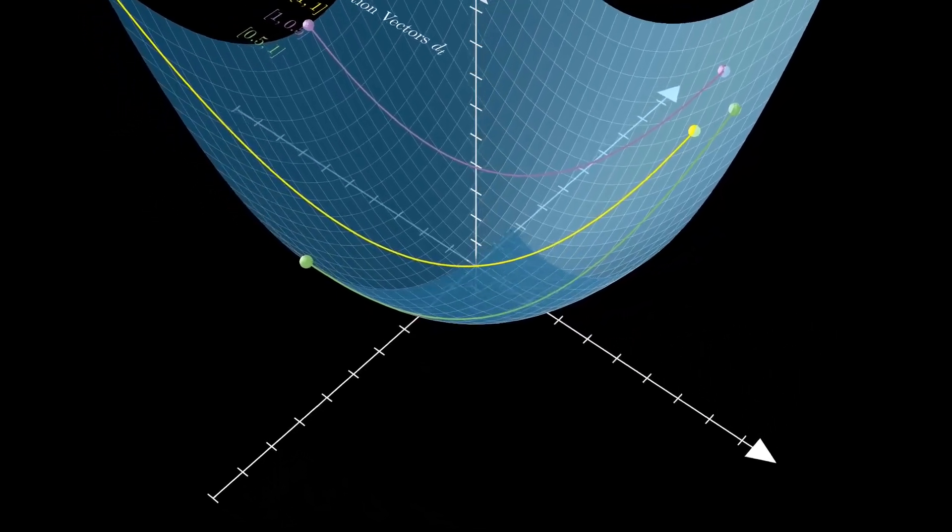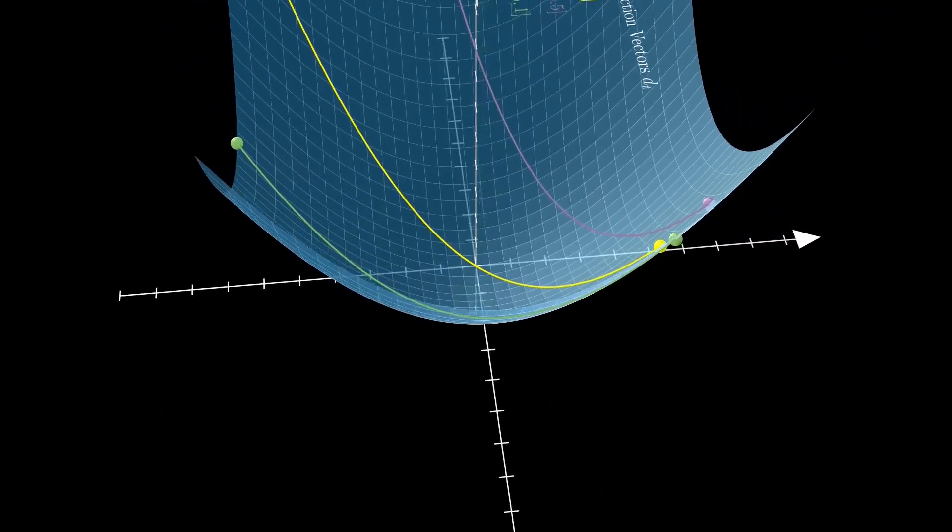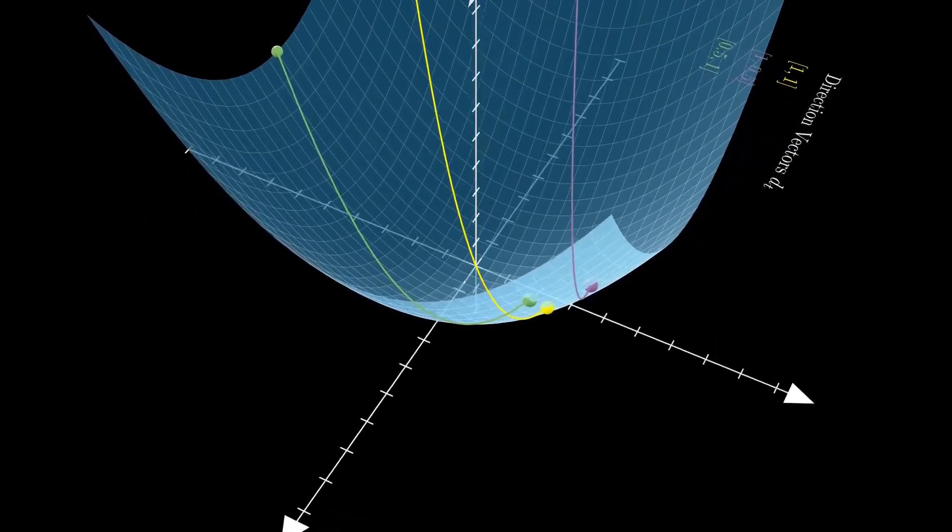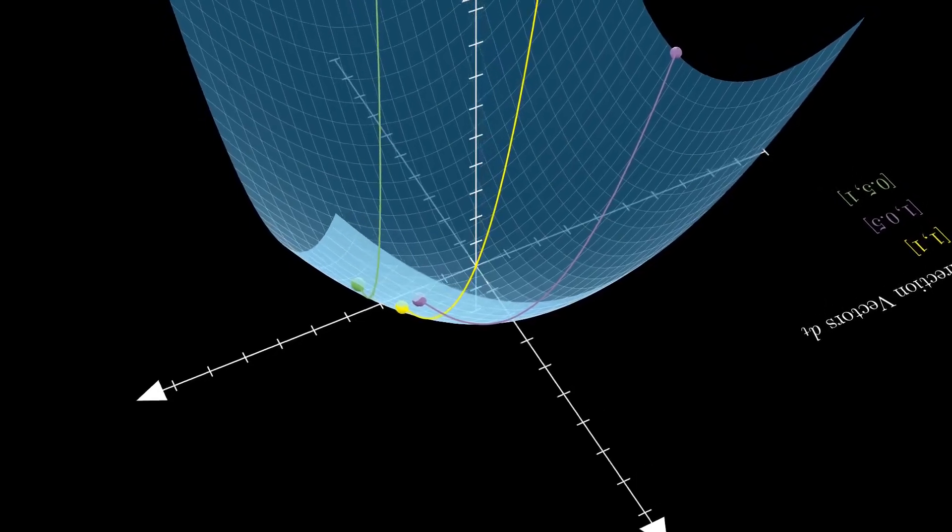So we are reducing the problem to a single variable, which is the step size eta, and our goal is to find the value of eta that minimizes the function along that direction.